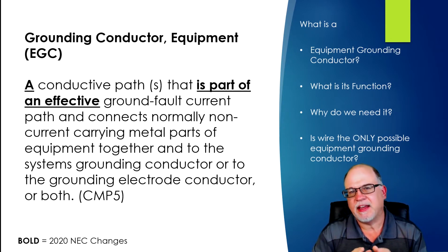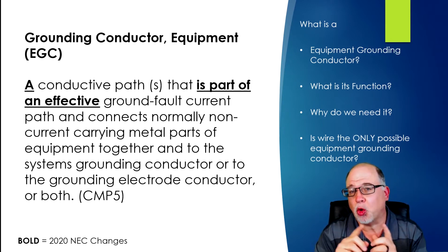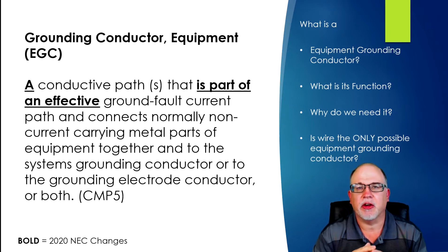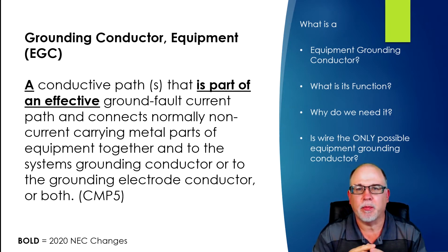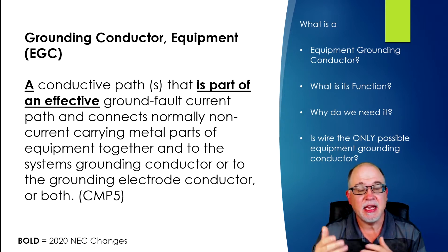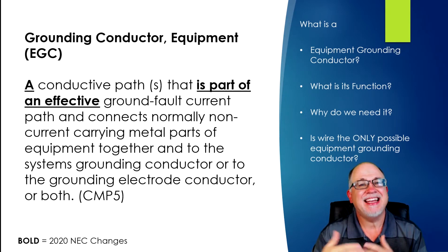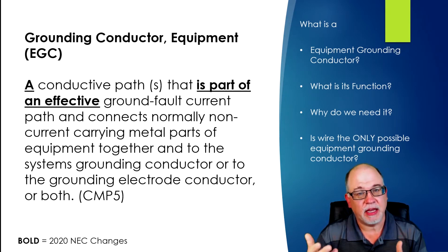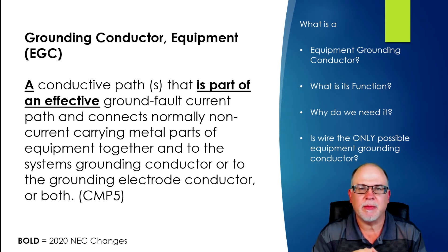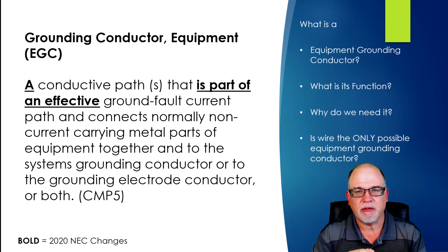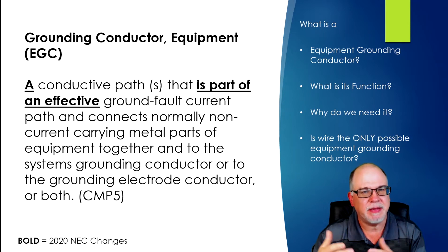There are times in the code which will require that an equipment grounded conductor has to be insulated. Most notably, branch circuits to patient care spaces in 517.13A and B — the B portion will tell you that the equipment grounded conductor has to be insulated. You also get some of those requirements when you're dealing with swimming pools in Article 680, where the equipment grounded conductor would need to be insulated.